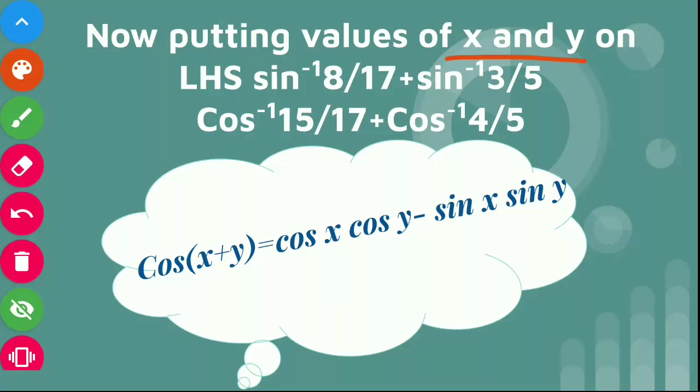Now we will put the values of x and y on left hand side. It is our left hand side. By putting the values, we got cos inverse 15 by 17 plus cos inverse 4 by 5. Now, how to solve this?